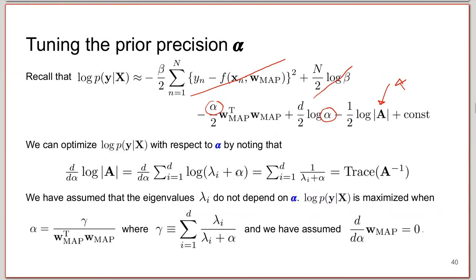The eigenvalues of A are just lambda_i plus alpha. Taking the derivative — this is one over the quantity because of the derivative of the log. You can easily replace this expression back into the original expression for the model evidence. The derivative with respect to alpha is just W_map transpose W_map divided by two, and this other derivative is the same. After a bit of algebra, I end up with: alpha equals gamma divided by W_map transpose times W_map. This is a very simple and intuitive expression.